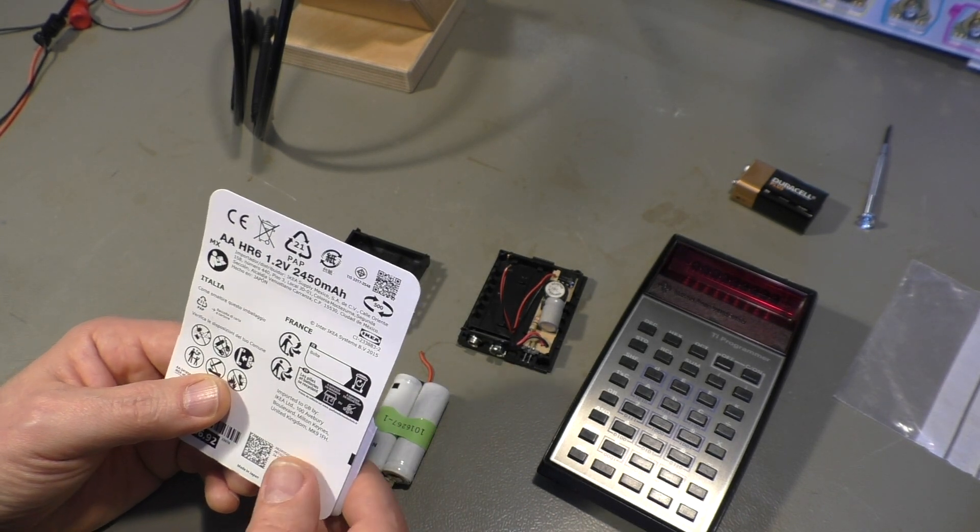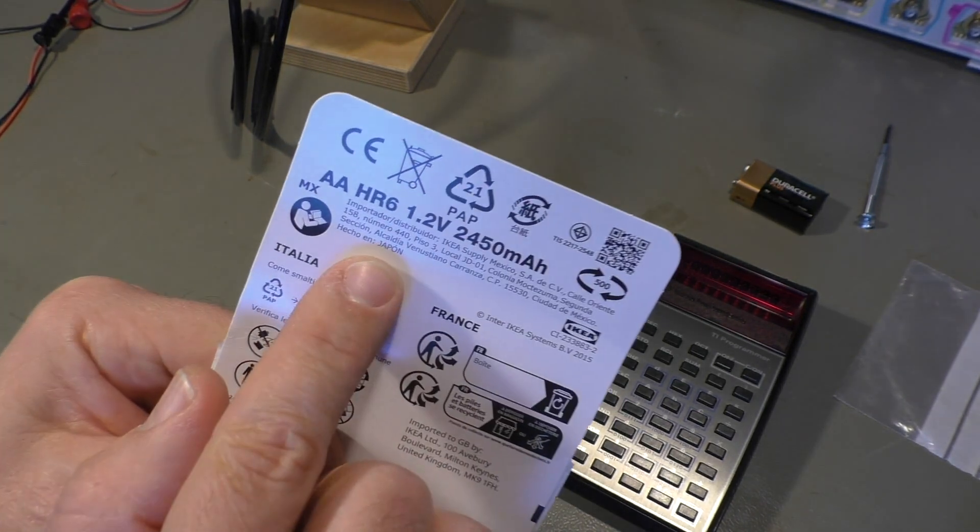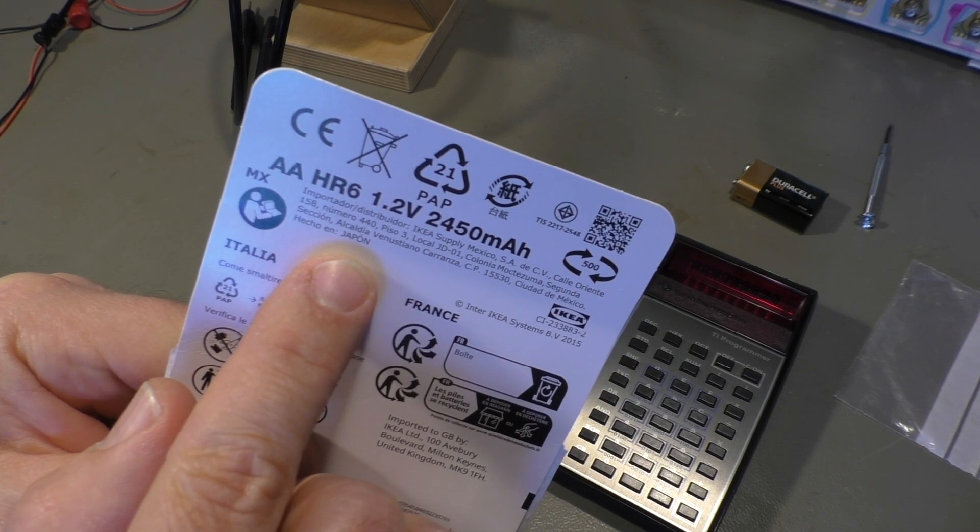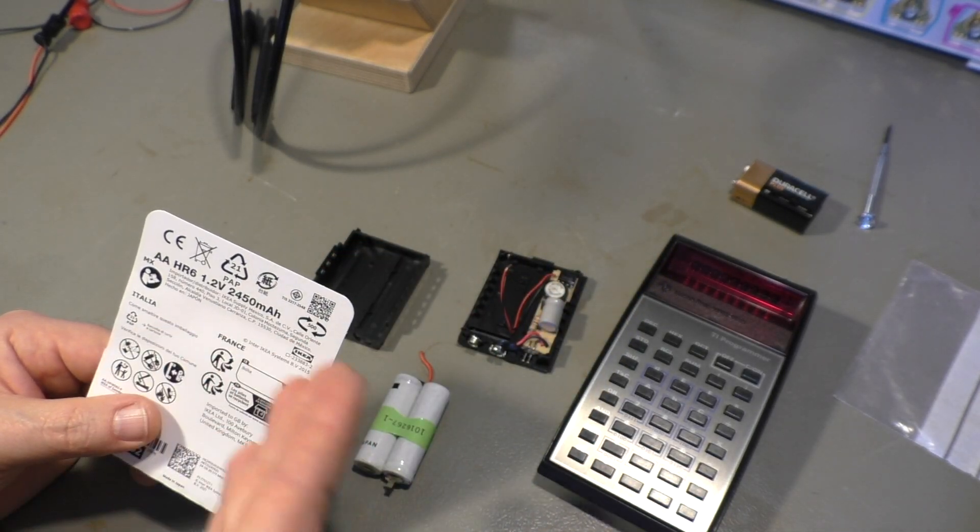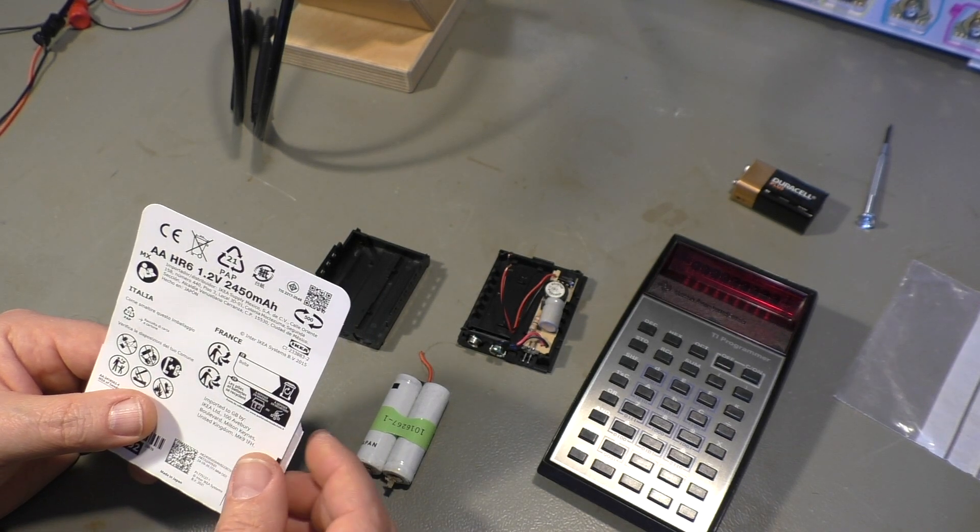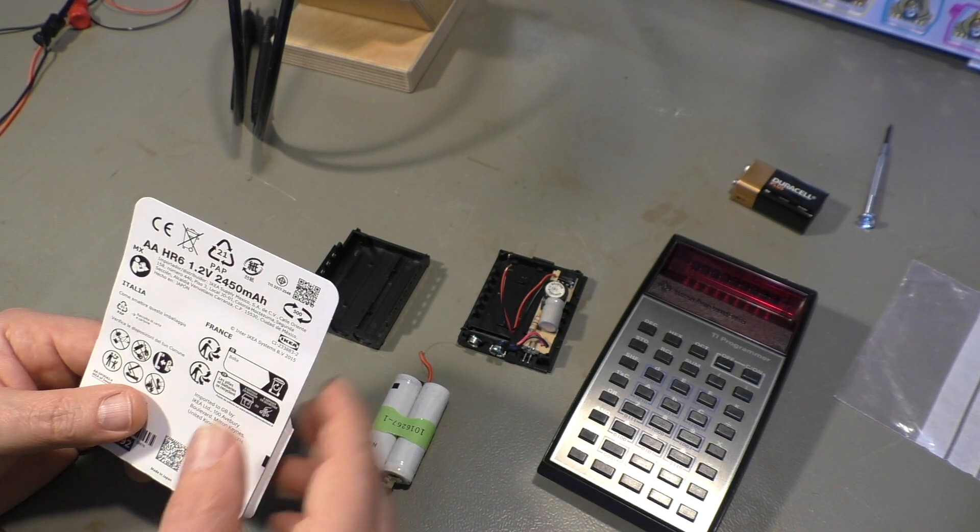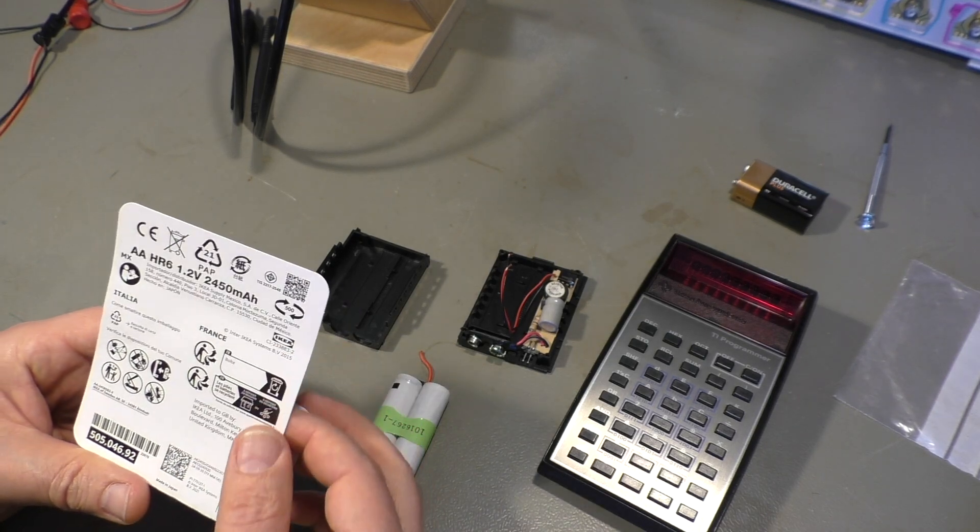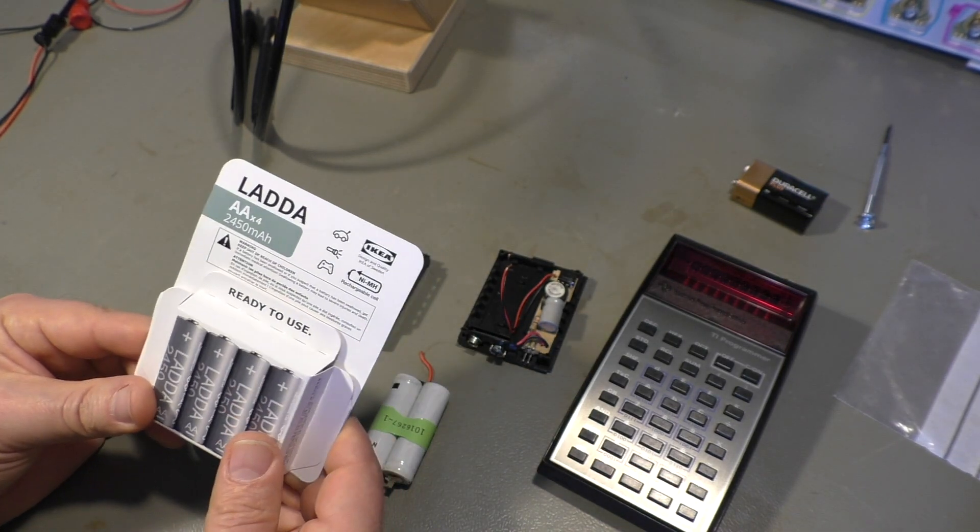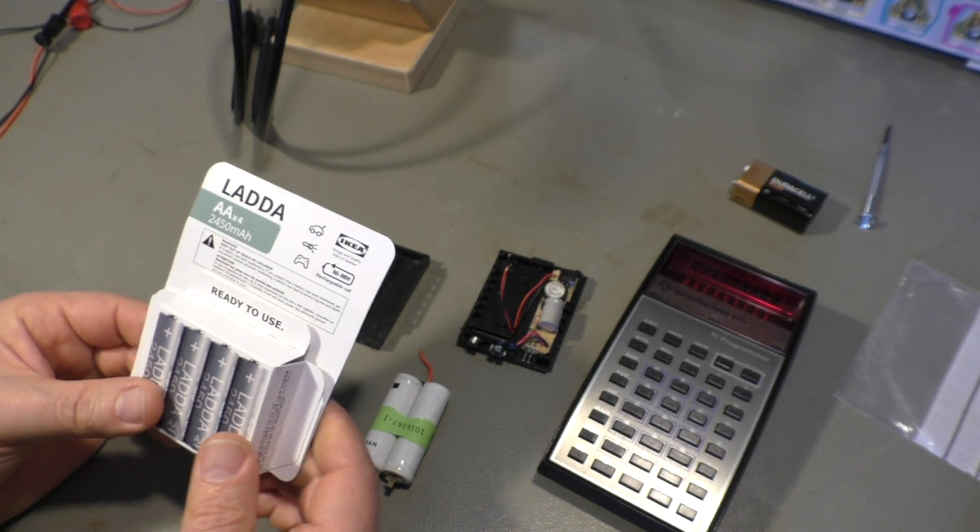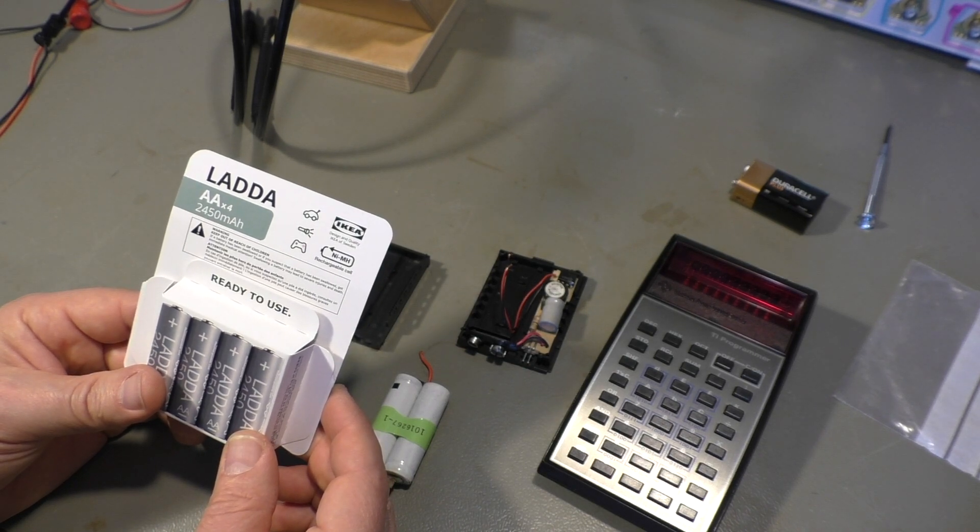The interesting part about these Lada batteries is they are made in Japan. Hechel in Japan. They are obviously imported via Mexico. Don't know why. From Japan to Mexico to Switzerland to everywhere. But that indicates that these batteries are probably or most likely rebranded Eneloop batteries from Panasonic.